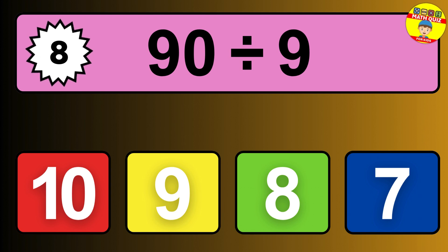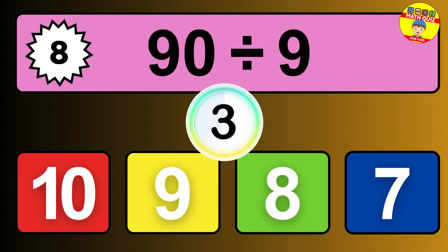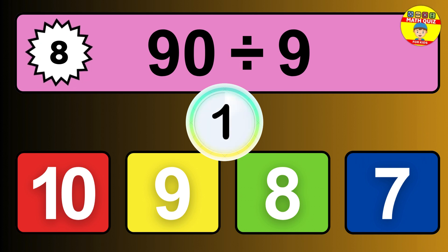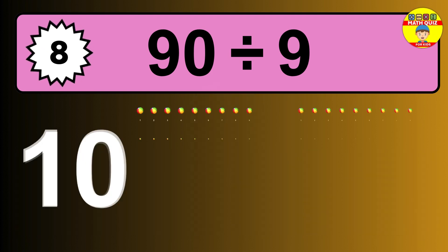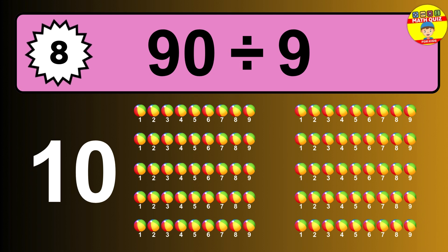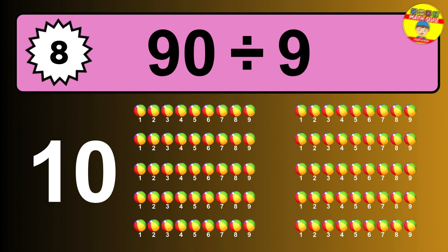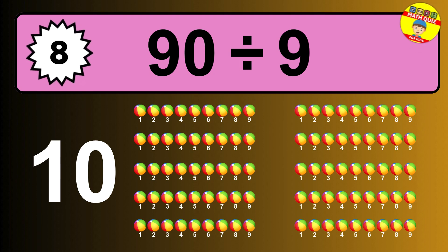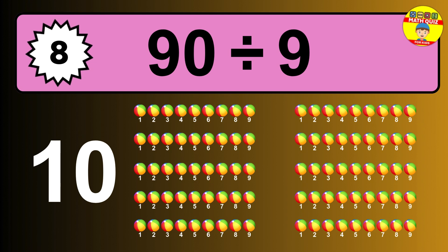90 divided by 9 is... time to think. Let's go to the solution. Divide the number 90 by 9. Each group contains 9 units. So dividing 90 by 9 results in 10 equal groups. Thus, the result is... 90 divided by 9 equals 10.